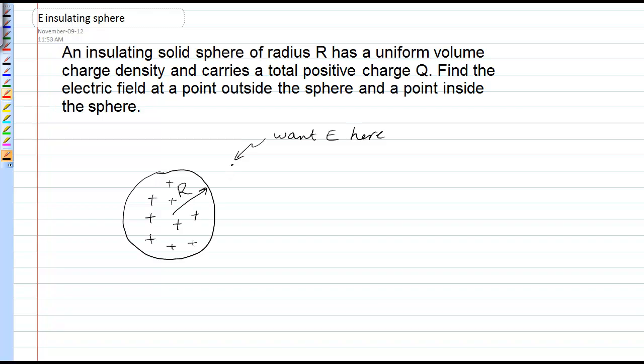So, we need a Gaussian surface, and the Gaussian surface, we draw through the point where we want the electric field, and we'll let the radius of that Gaussian surface be small r, where r is a variable.